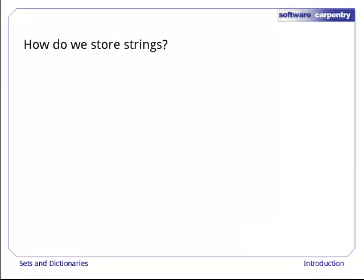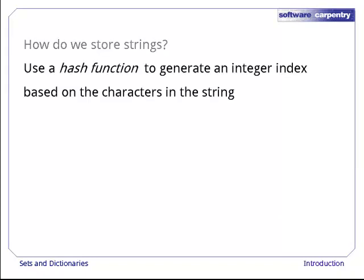Alright, we can store integers. What about strings? Where should they go? To find out, we'll use a hash function to generate an integer index from the characters in the string. Our function will always produce the same value for any particular string, which means we'll always know where to look for that string in our hash table.